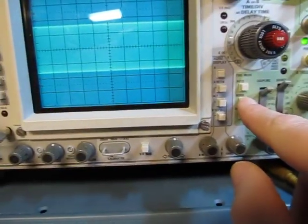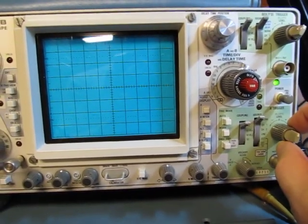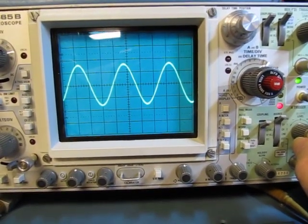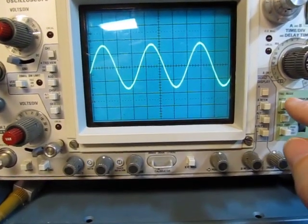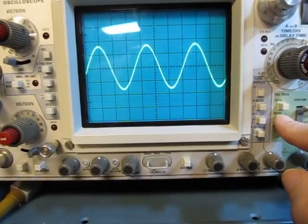And let's switch it back to normal, and if I rotate my trigger level back up again, we can see my trigger light lit up here, and I'm triggered again. So that's really what the auto mode does is it helps get you out of trouble.